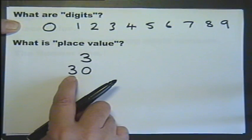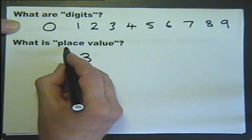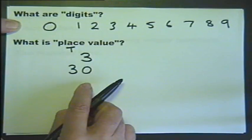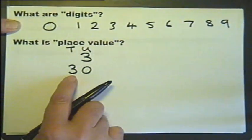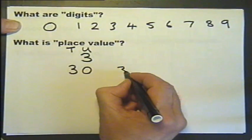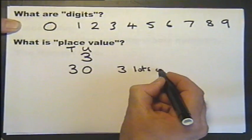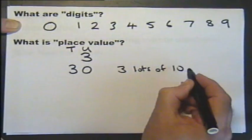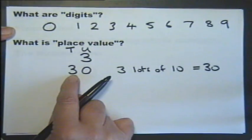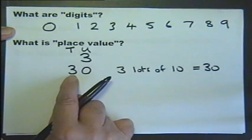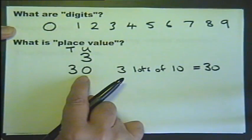This is because the 3 is in the tens column, and the zero is in the units column. So in other words, we have 3 lots of 10, and 3 lots of 10 is 30. So the digit 3 in this position gives you the number 30.